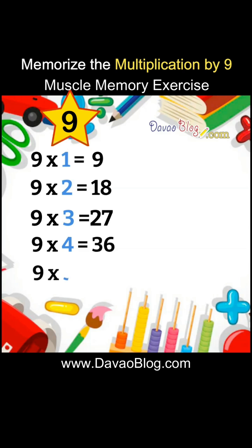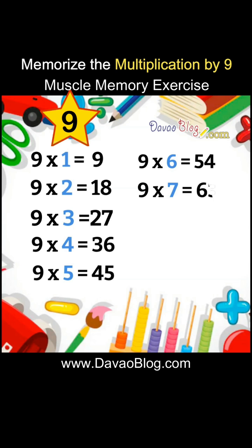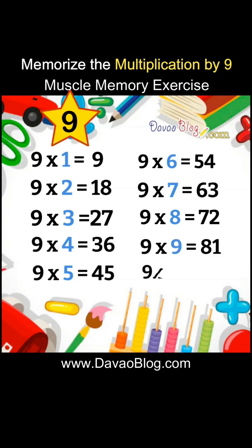9 times 5 equals 45. 9 times 6 equals 54. 9 times 7 equals 63. 9 times 8 equals 72. 9 times 9 equals 81. 9 times 10 equals 90.